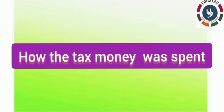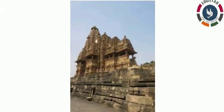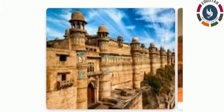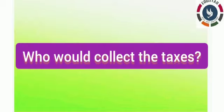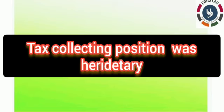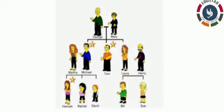What did the king do with the tax money? The king used tax money for administration, constructing temples and forts, and to fight wars. In return from wars, they would acquire wealth, land, and trade routes from other kingdoms. Very influential families were appointed to collect taxes, and this position was often hereditary — passed from parent to child within the family. Army positions were also hereditary, and mostly the relatives of the king held these positions.